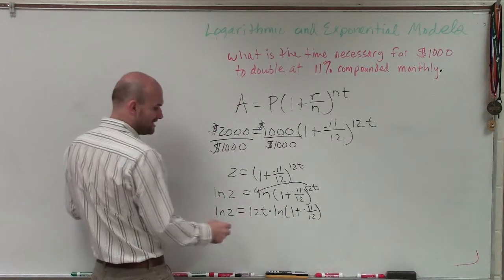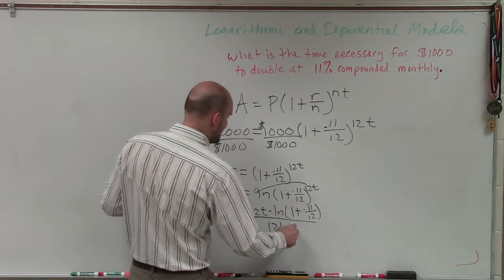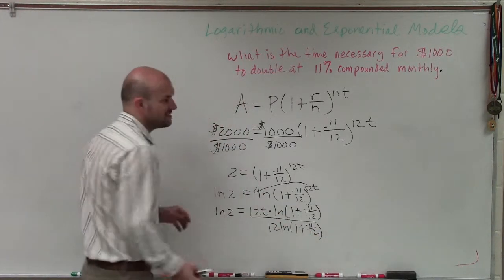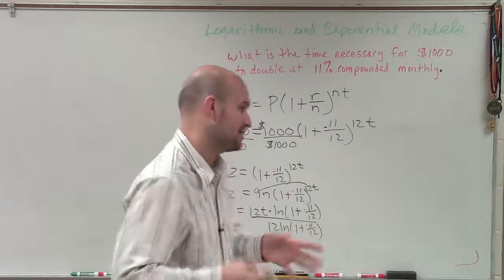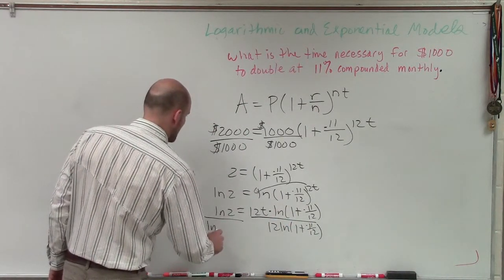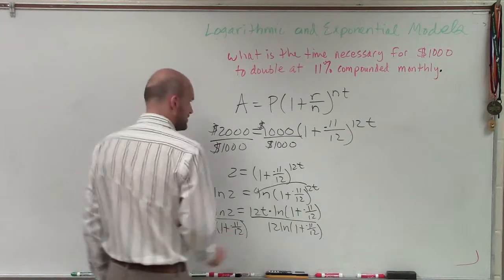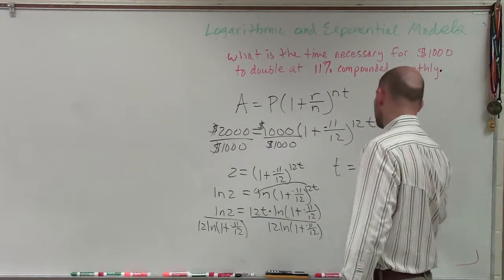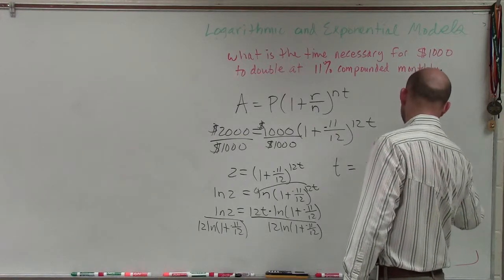Now to solve for t, I'm simply just going to divide by 12 ln of 1 plus 0.11 divided by 12. Now I'm not computing this because I don't want to evaluate the exact answer and then just not compute. I want to do all my computations at one time. So therefore, my t time is going to be t equals ln of 2 divided by 12 times ln of 1 plus 0.11 divided by 12.